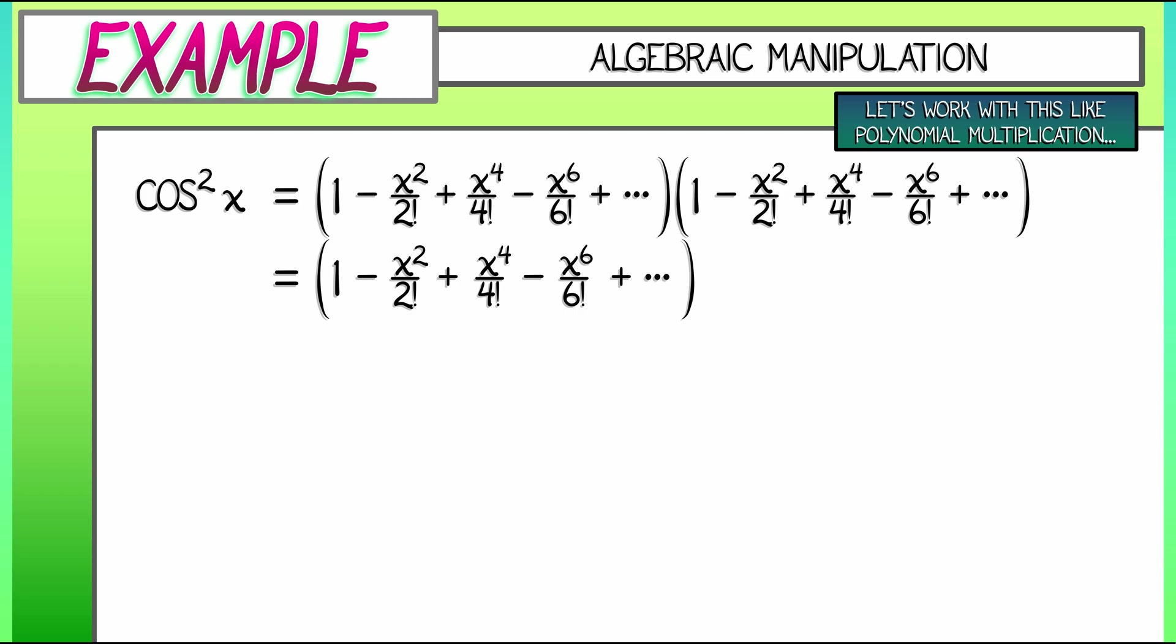So I have 1 times the cosine series. Write that out. Now, let's distribute out minus x squared over 2 factorial times the cosine series. What do I get? Minus x squared over 2 factorial plus x to the fourth over 2 factorial times 2 factorial minus x to the sixth over 2 factorial times 4 factorial plus x to the eighth over 2 factorial times 6 factorial.